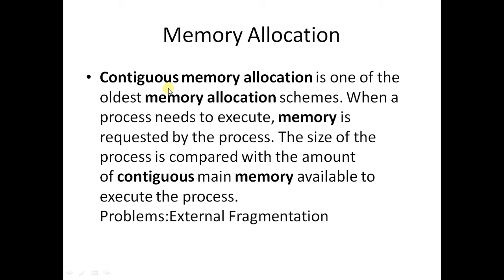Memory allocation is mainly of two types: contiguous memory allocation and non-contiguous memory allocation. In contiguous memory allocation, which is the oldest scheme, when a process needs to execute, memory is requested by the process. The size of the process is compared with the amount of contiguous main memory available to execute the process.